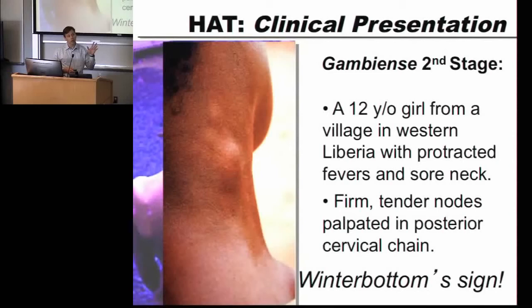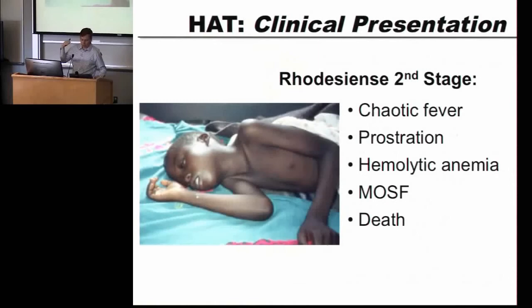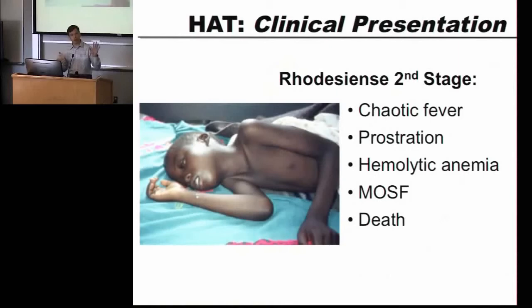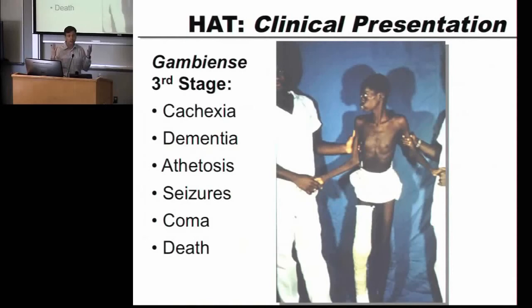That's second phase West African disease. Second phase East African disease is totally different — it's not just cervical lymphadenopathy, it's sepsis: protracted high-grade fevers, patients who are profoundly altered, too sick to get out of bed, multi-organ system failure, sepsis, and death. They usually don't even survive to the classical third stage. Third stage in West African disease is what I showed you before — patients with an encephalitis leading to cognitive difficulties and, for reasons no one fully understands, a very classical day-night reversal. Ultimately, without treatment, these patients die. Human African Trypanosomiasis is universally fatal without treatment.